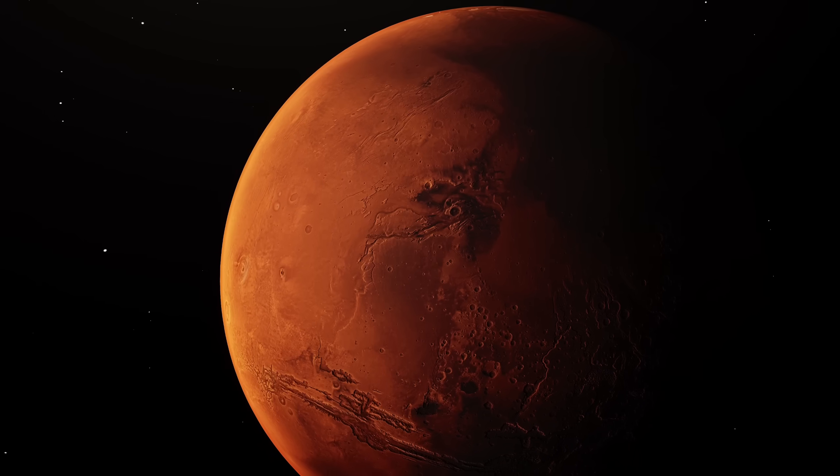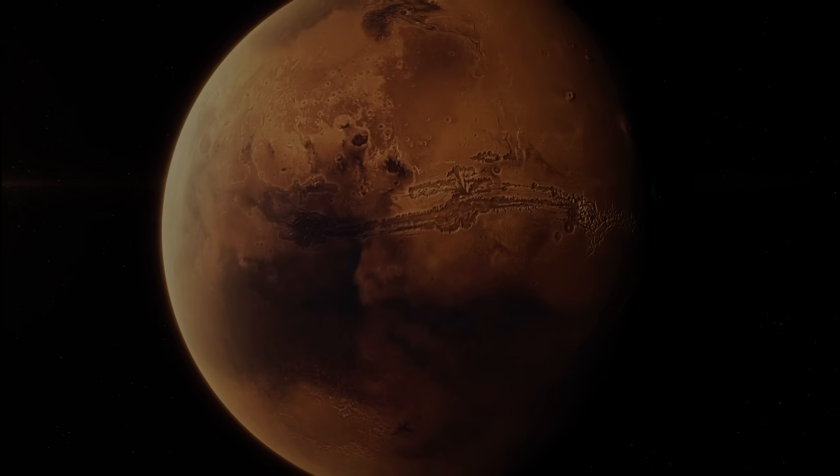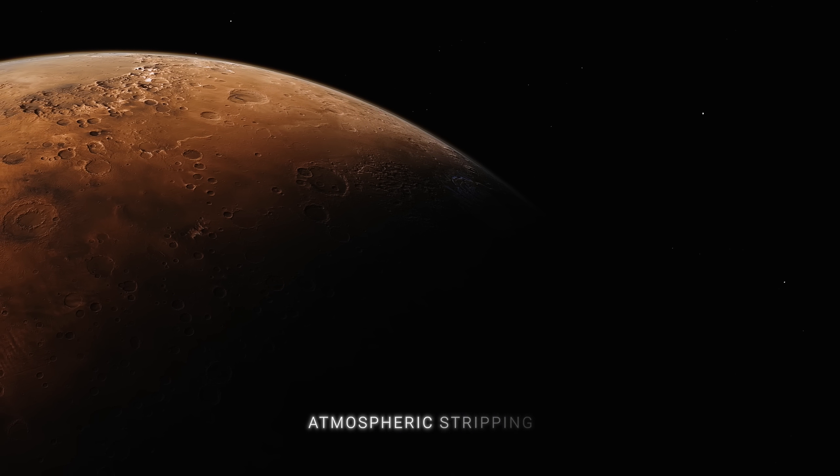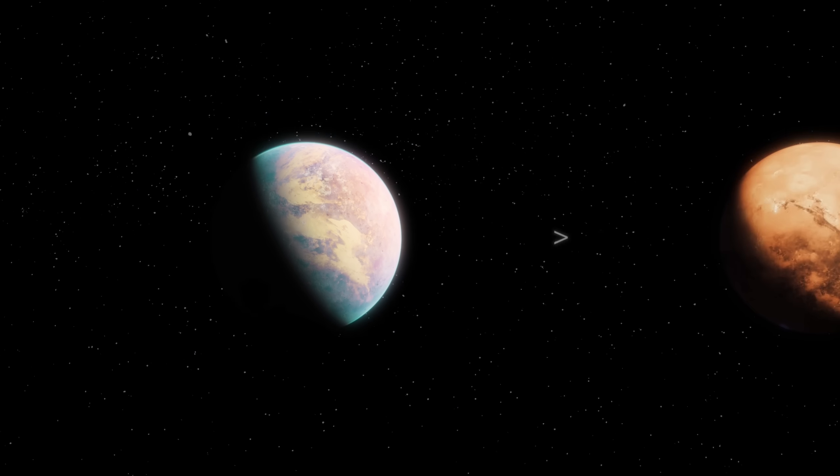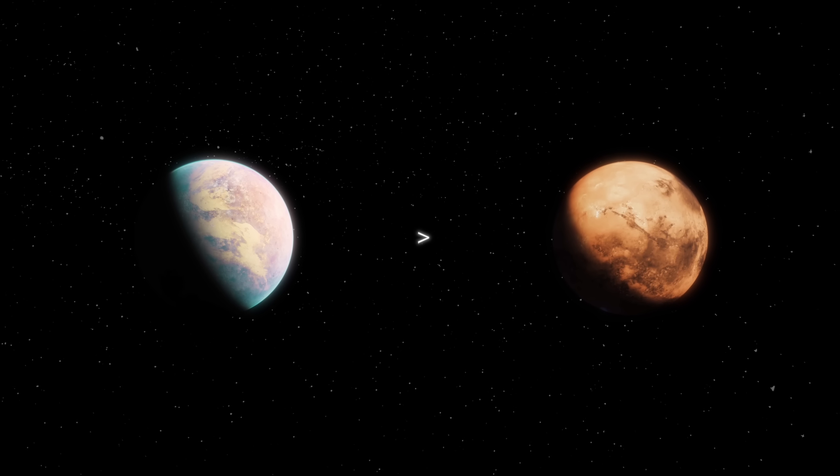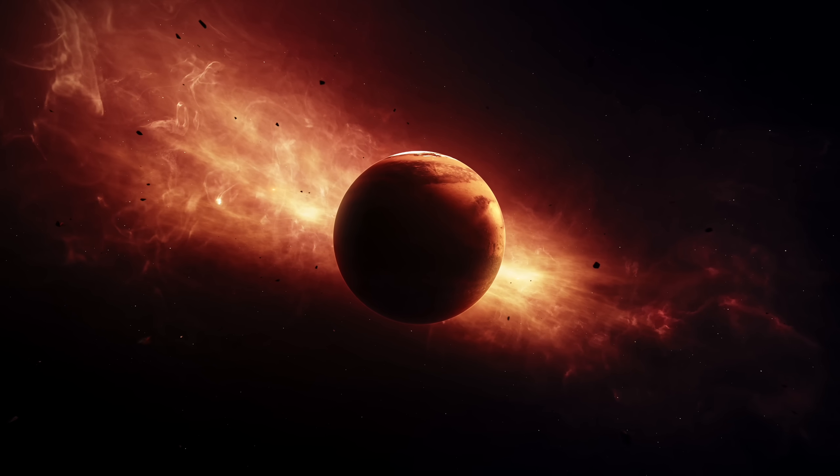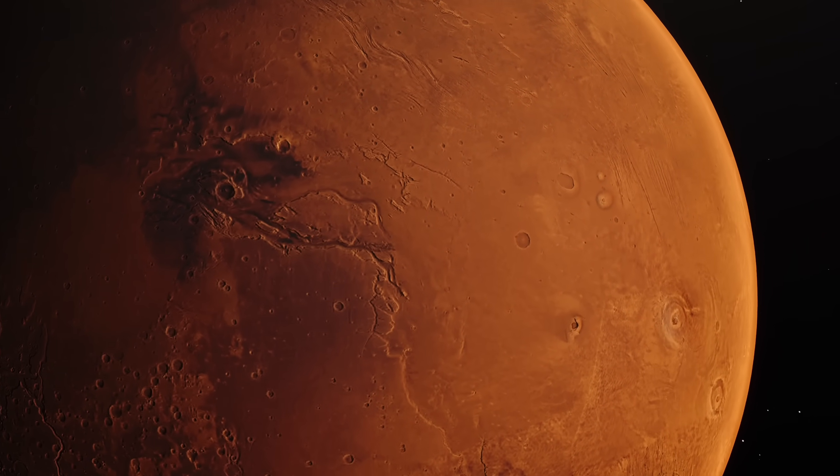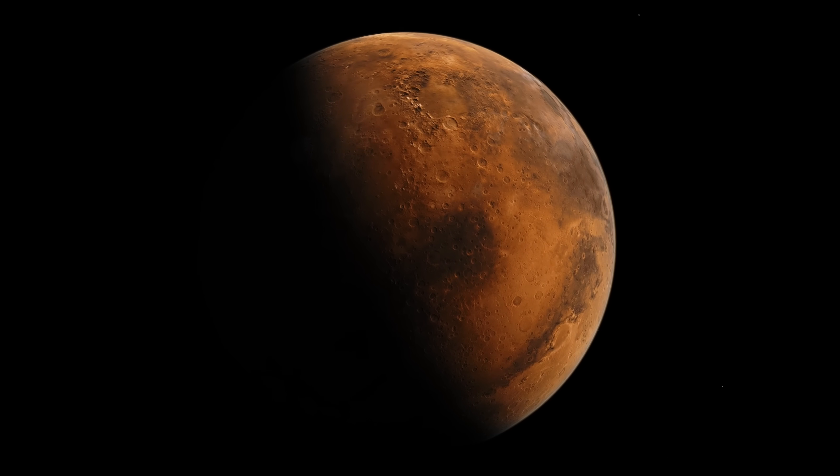This suggests that Mars' remaining magnetic field may have hastened the planet's transformation into the cold and barren world it is today. Over billions of years, this caused Mars to lose much of its atmosphere, a process known as atmospheric stripping. This turned Mars from a potentially warm and wet world in its early history into the cold and dry planet we see today. The case of Mars provides a vivid illustration of the importance of magnetic fields to a planet's habitability. It shows us that without a strong magnetic field, a planet, even one as Earth-like as Mars, can lose the things that make it habitable—atmosphere and water. By the way,